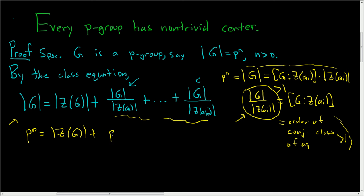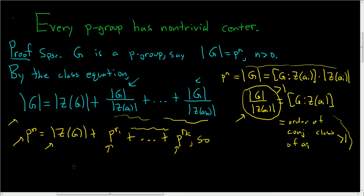So we can write the equation as: p to the n equals the order of the center of G, plus p to the r_1 plus dot dot dot plus p to the r_k. Now, p divides the left side, p divides each of the terms on the right, so p must divide the order of the center.